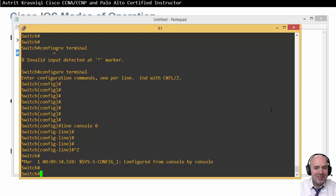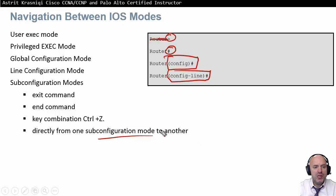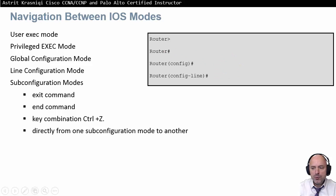To summarize: user mode (>) is a restricted view; privilege mode (#) gives full administrator access; global configuration mode is for device-wide configuration; and sub-configuration modes are for specific components. Use Ctrl+Z or 'end' to jump directly back to privilege mode. Use 'exit' to go one step back at a time. Use 'disable' to move from privilege to user mode, and 'enable' to move from user to privilege mode.